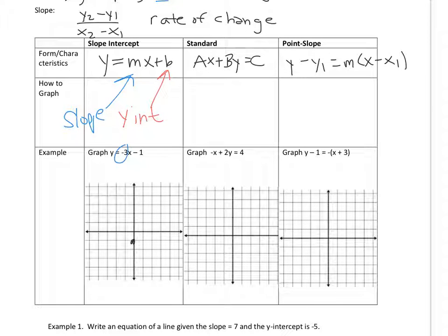So if the slope is negative 3, I can actually write negative 3 as negative 3 divided by 1. So you can either go down 3, right 1, or up 3, left 1. And you're still going to have the same line.